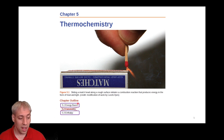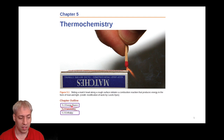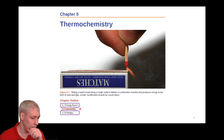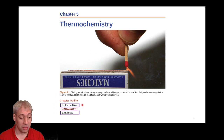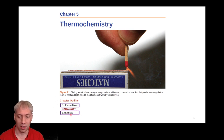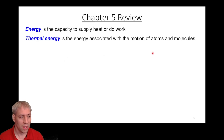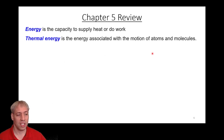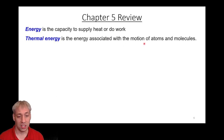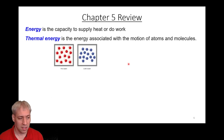In chapter five, sections 5.0 and 5.1, we'll talk about energy basics, and then we'll talk about the enthalpy term which will be key to discussing things like Gibbs free energy. We defined energy as the capacity to supply heat or do work. Thermal energy is the energy associated with motion of atoms — that's the heat aspect of this.